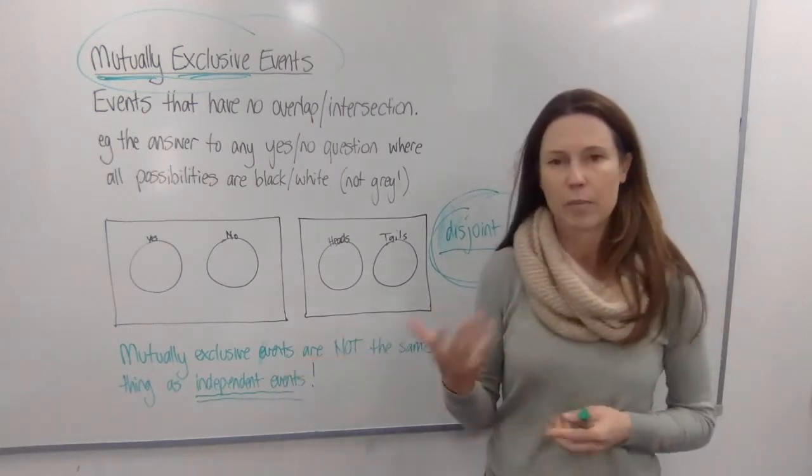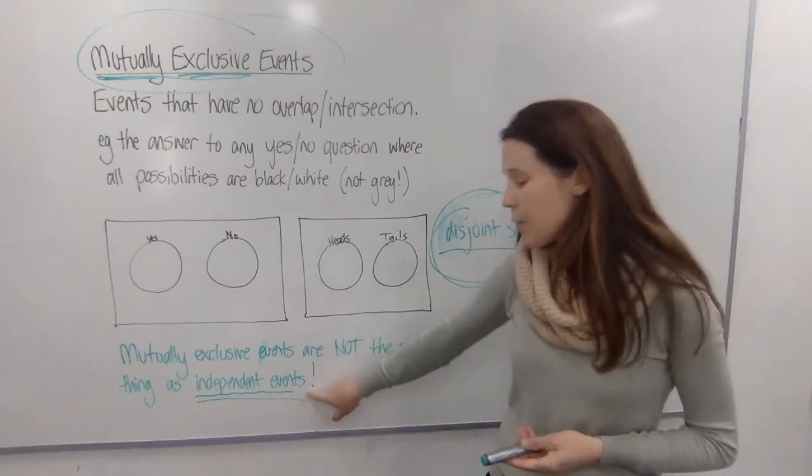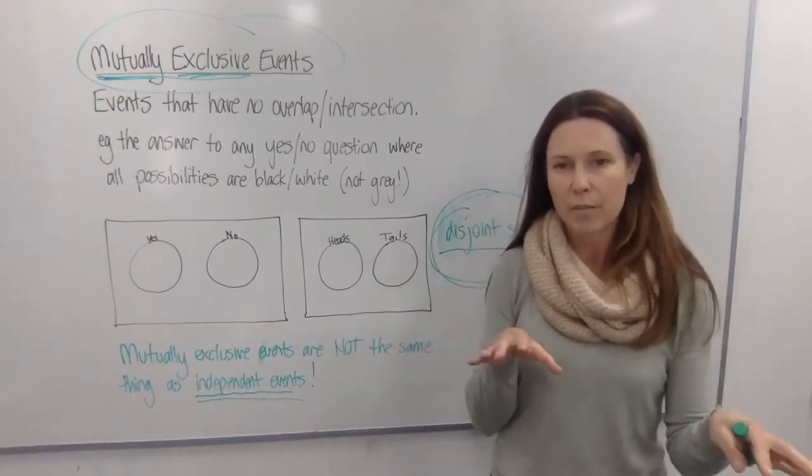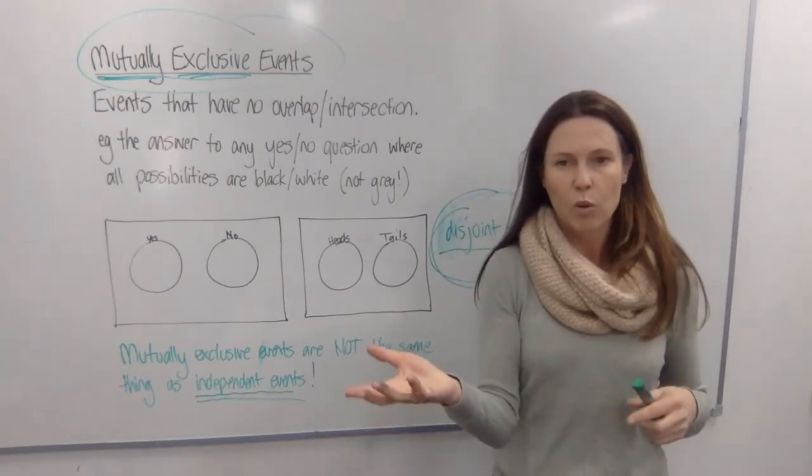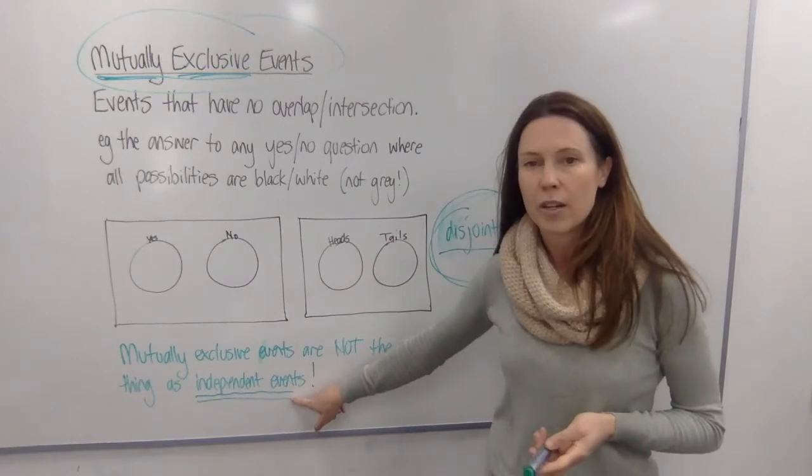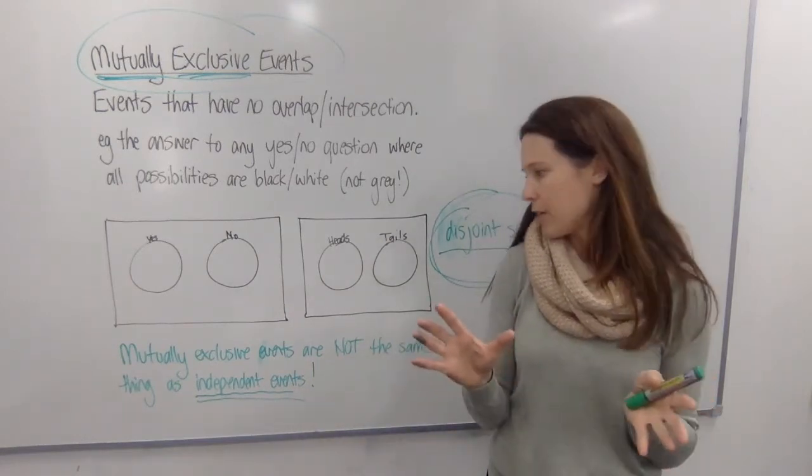So we tend to refer to these when we're thinking of different outcomes of the same experiment whereas independent events are events that are completely independent of each other, meaning the probability of one won't affect the probability of the other. We more often use this terminology when we're actually dealing with two slightly separate experiments that are independent of each other.